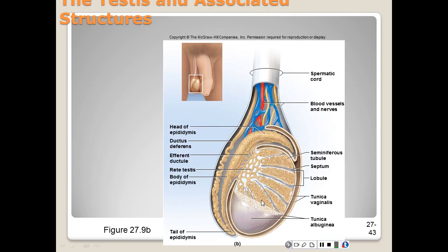After sperm leaves the testes, it travels through a series of spermatic ducts to reach the urethra. About twelve small efferent ductiles arise from the posterior side of the testis, and they carry the sperm to the epididymis. You can see these small spermatic ducts in the diagram.